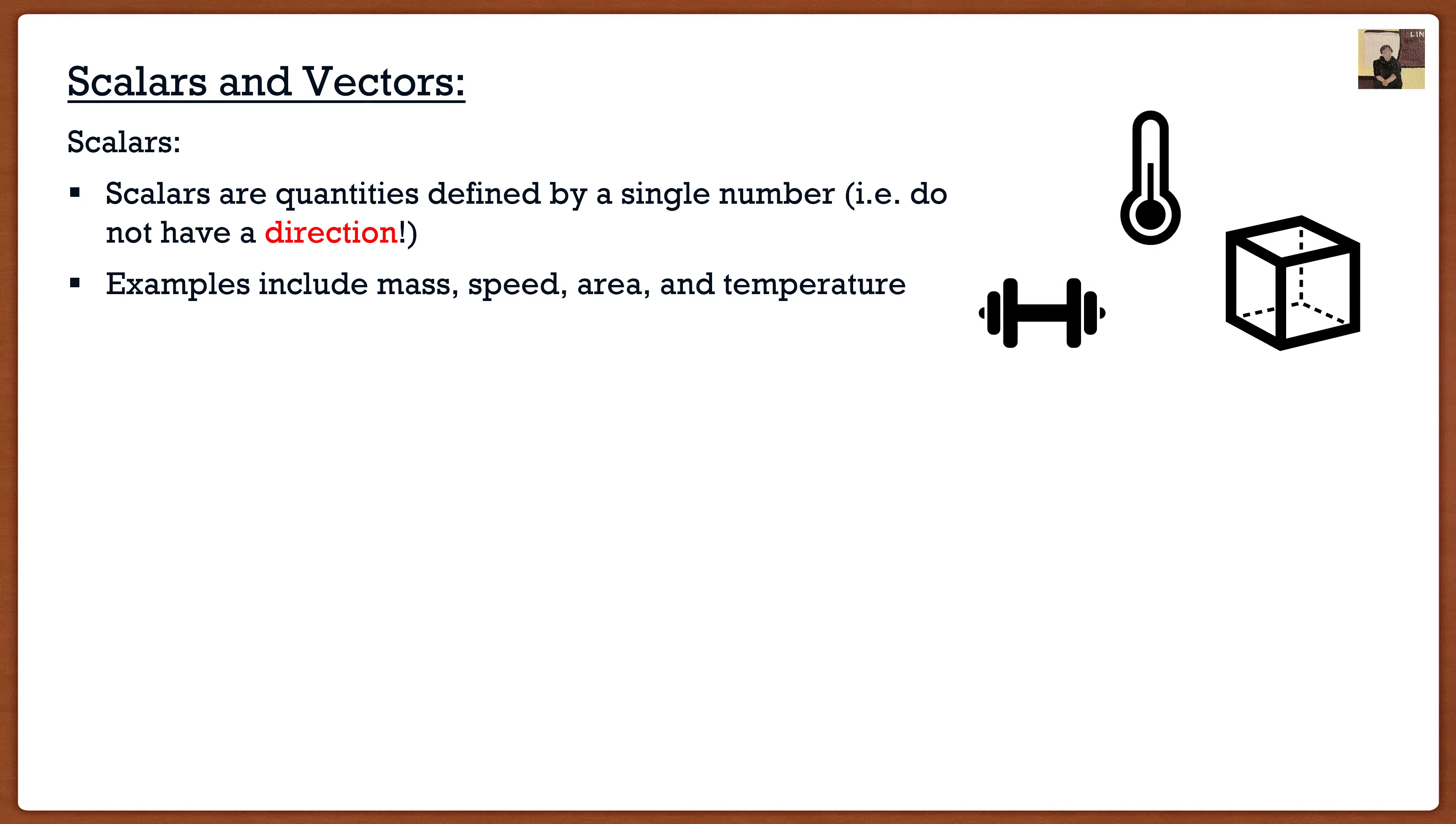And this makes sense, right? I wouldn't say that my mass is, let's say, 180 pounds south. It may be going south, but it's not actually directing itself. Same with temperature. I wouldn't say it's 40 degrees north, something like that. So if it does not have a direction, it's a scalar. It's pretty easy to determine what a scalar is.